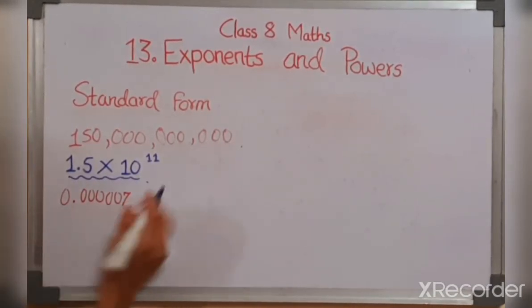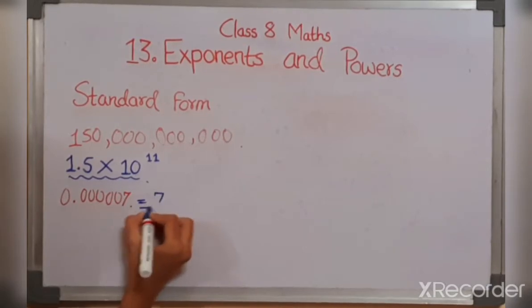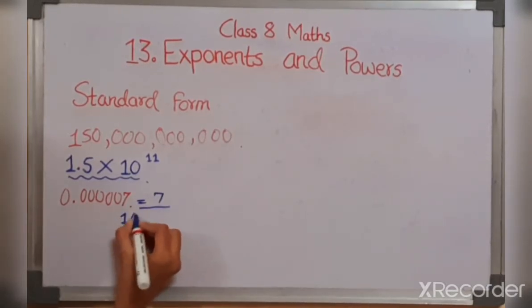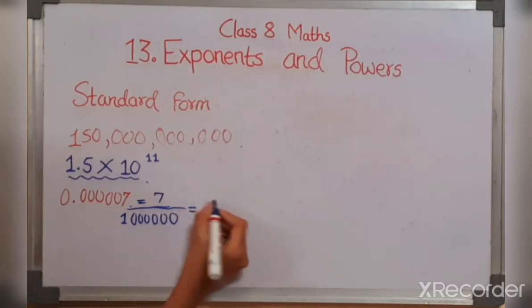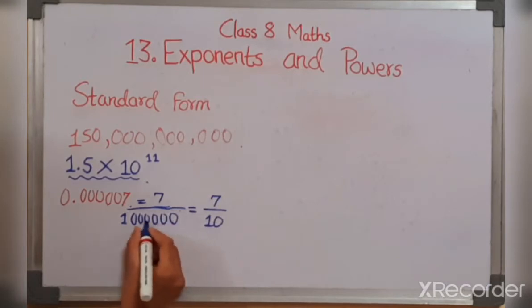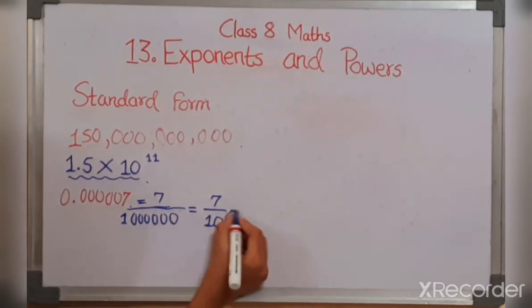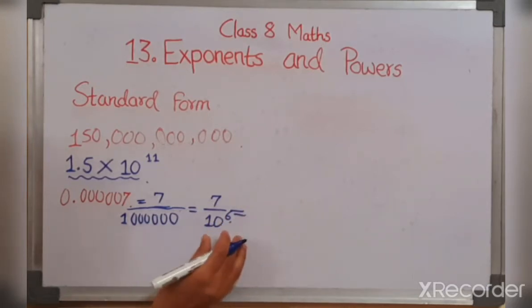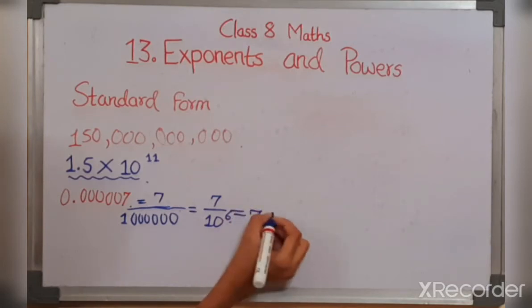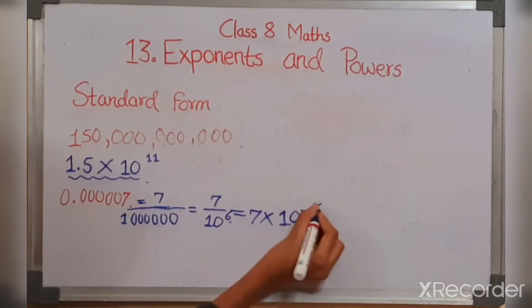So we know that this is equal to 7 upon 1,000,000. So that's 6 zeros, which is equal to 7 upon 10 raised to power 6. We know that when this denominator number we take it in numerator part, it is going to be 7 into 10 raised to power minus 6. So this is the standard form of this number.